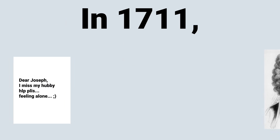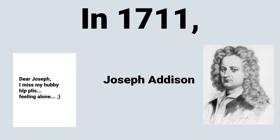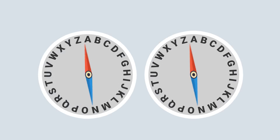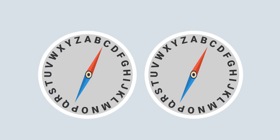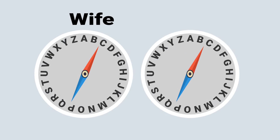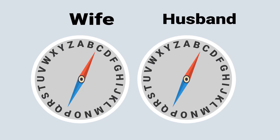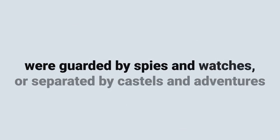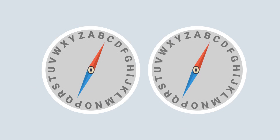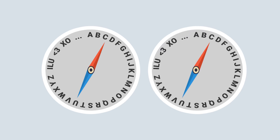In 1711, a worried wife wrote a letter to advisor Joseph Addison, asking for advice on how to bear the long absence of her beloved husband. Mr. Joseph mentioned Porta's device, adding that a pair of boxes might enable her and her husband to communicate even when, as Joseph quoted, they were guarded by spies and watches, or separated by castles and adventures. Addison added that beside the 26 letters, the device would contain phrases used by lovers.